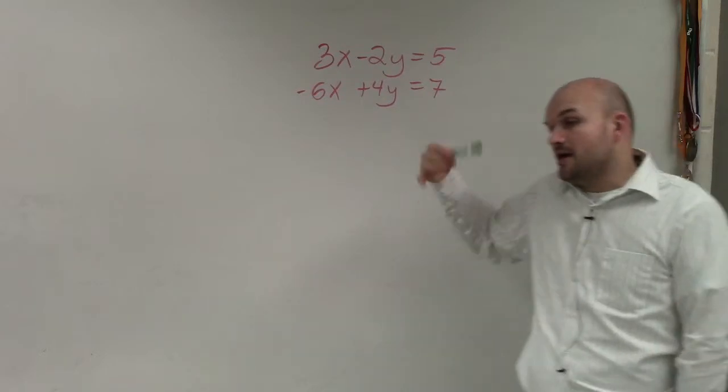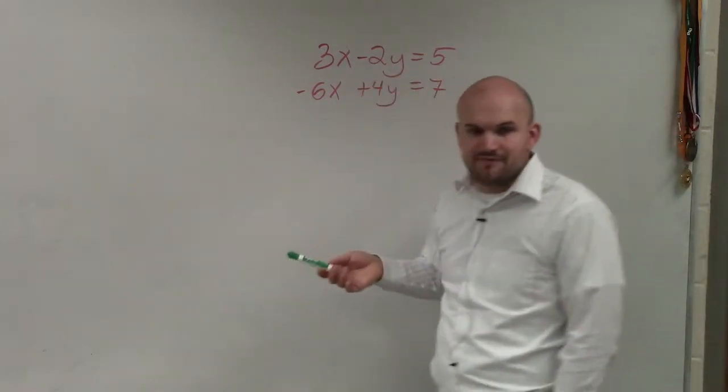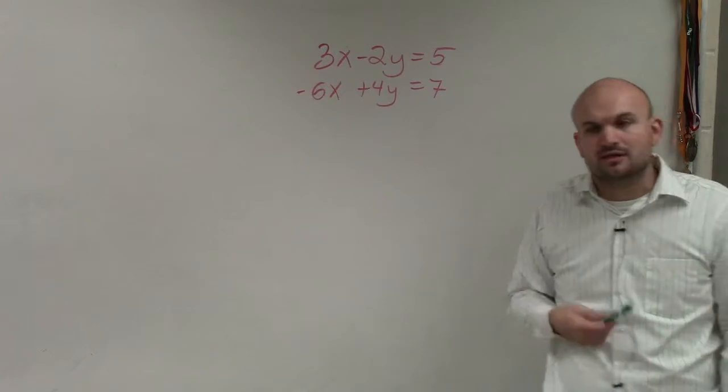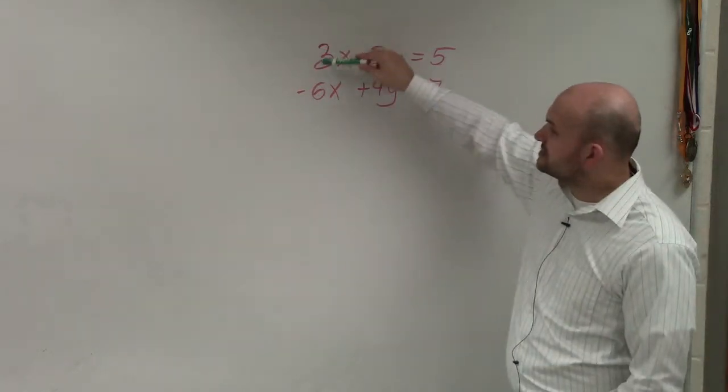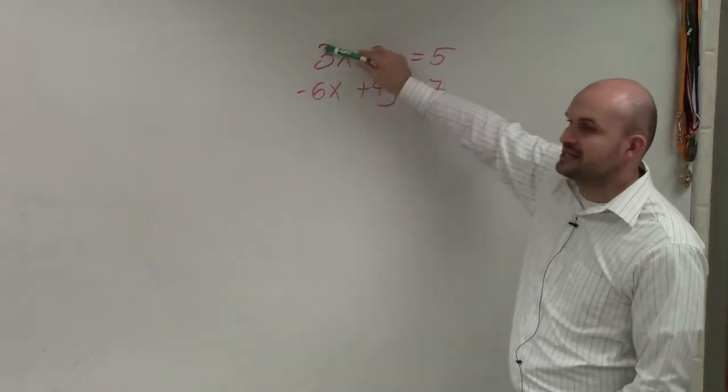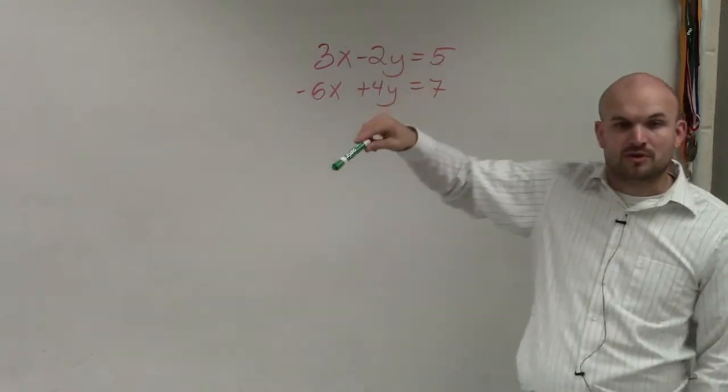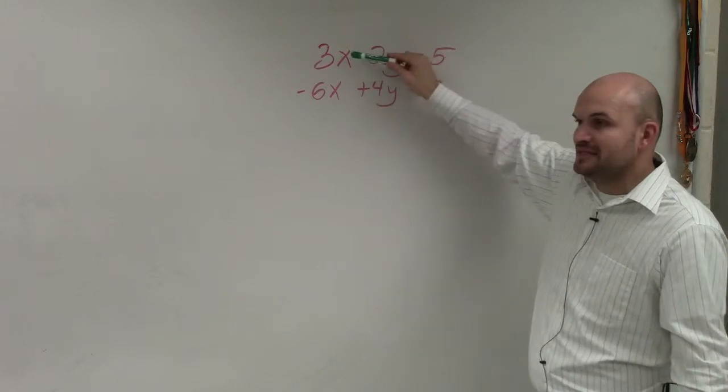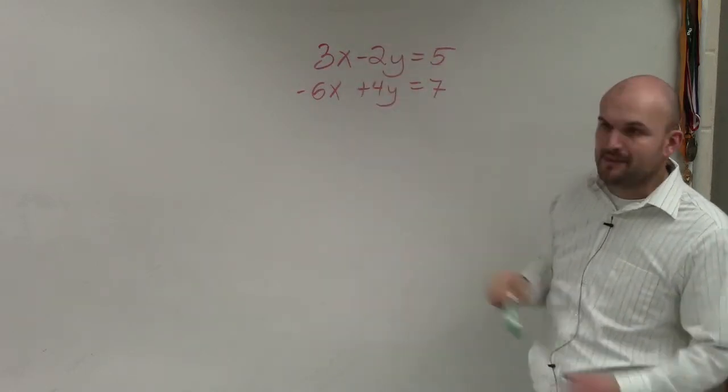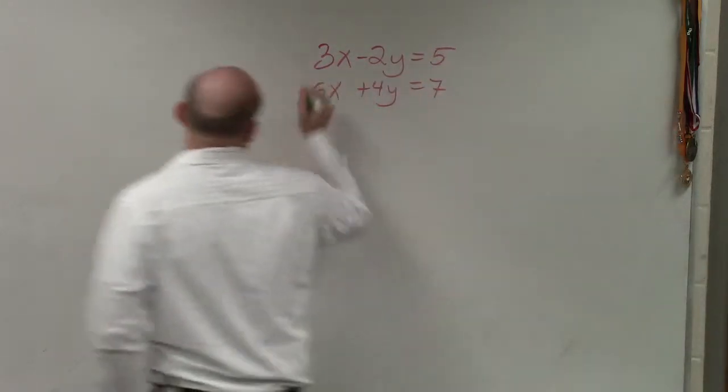So I need to say, which one, does it matter which one is going to have the smaller coefficient, or the least common multiple? Well, forget about the negatives. 3 and 6 have a least common multiple of 6, and 2 and 4 have a least common multiple of 4. So either way, to get them to be the same, all I need to do is multiply my top equation by 2. So I'm going to do that.